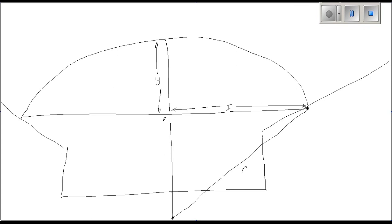And now this length here, that there is R, the radius, minus Y. And now we have a situation where we have a triangle. It's a right angle triangle.